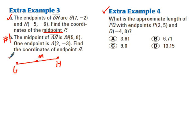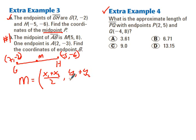So, G is at (7, -2) and H is (-5, -6). I'm going to go ahead and write the midpoint formula here down. That's going to be x1 plus x2 divided by 2, which is the average of the x values plus the average of the y values.